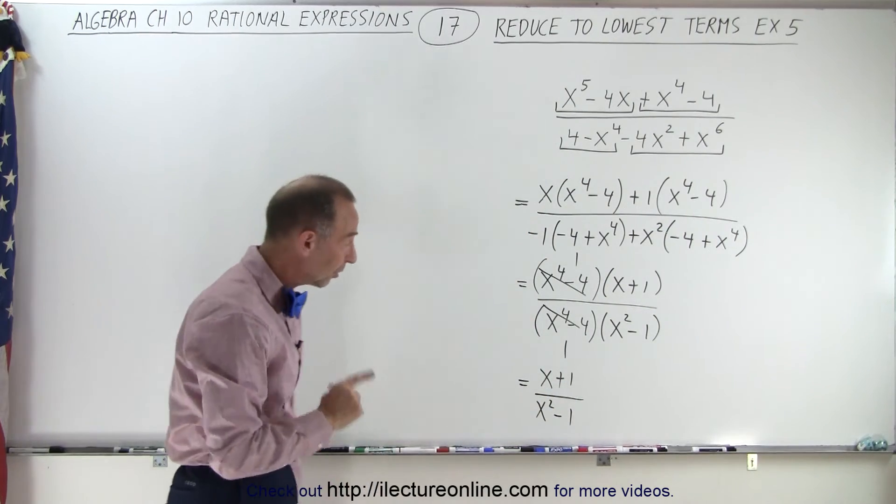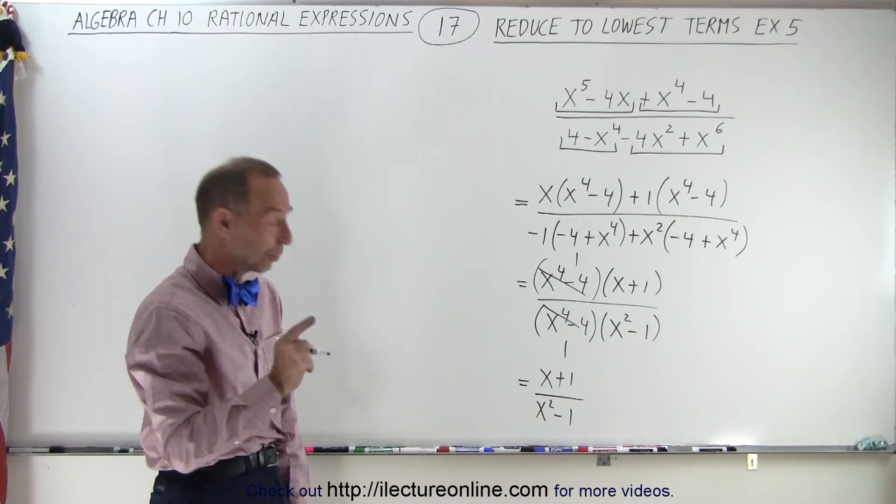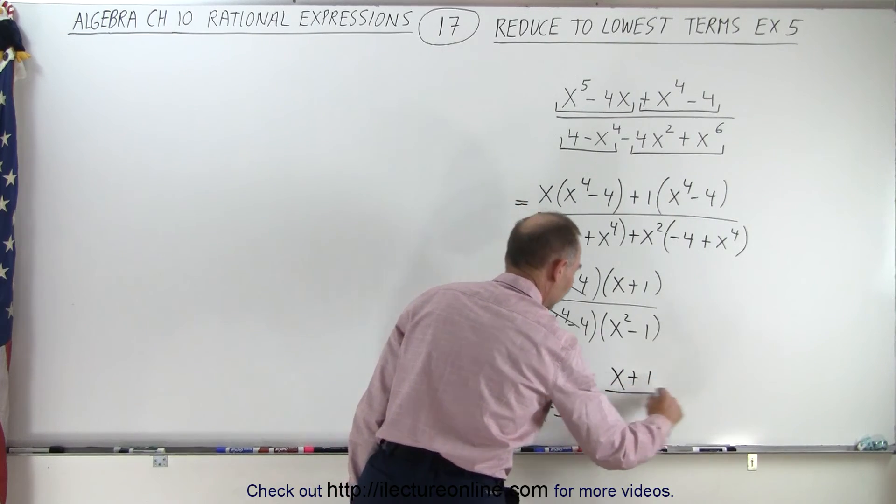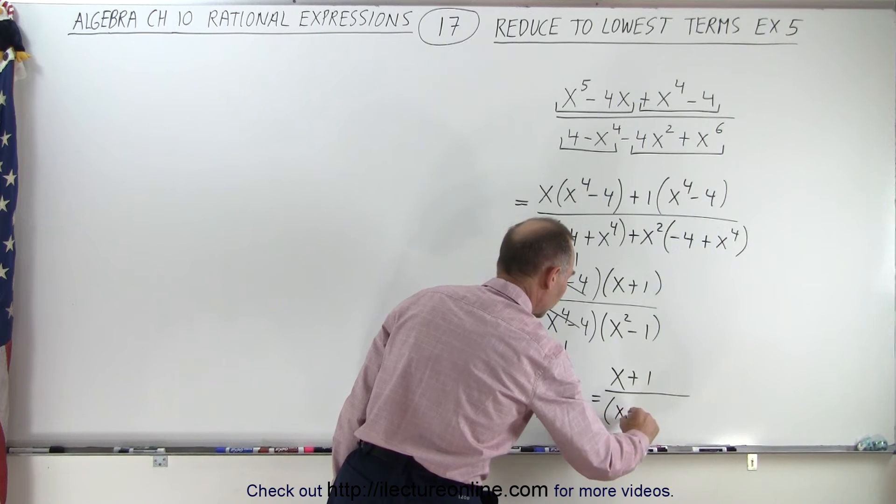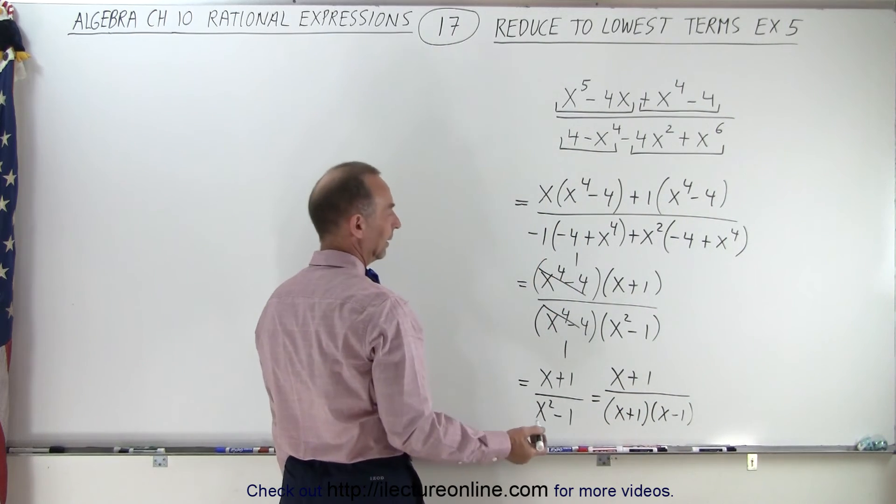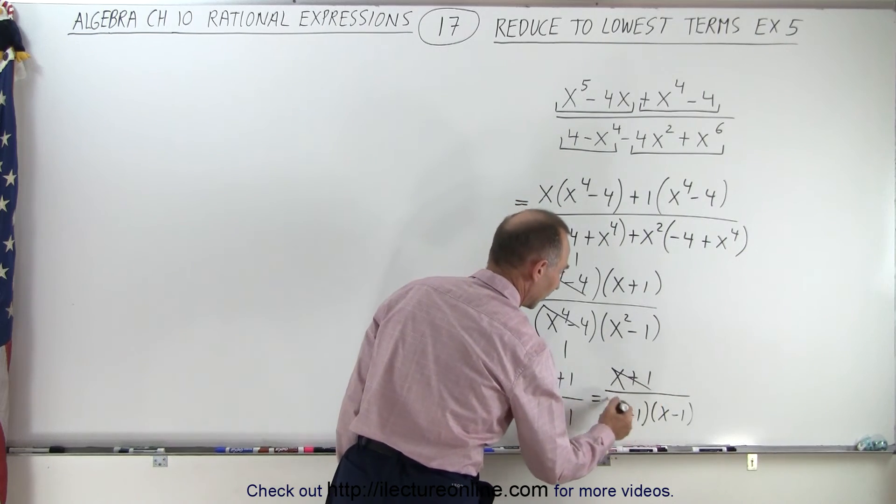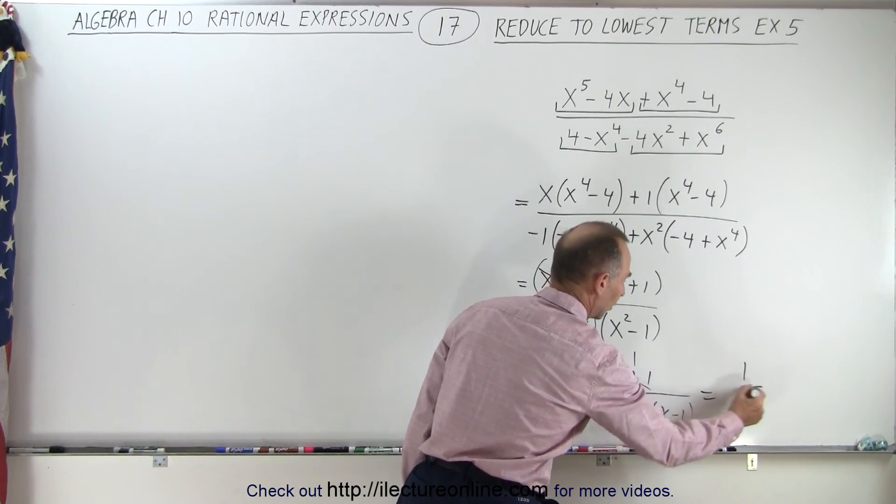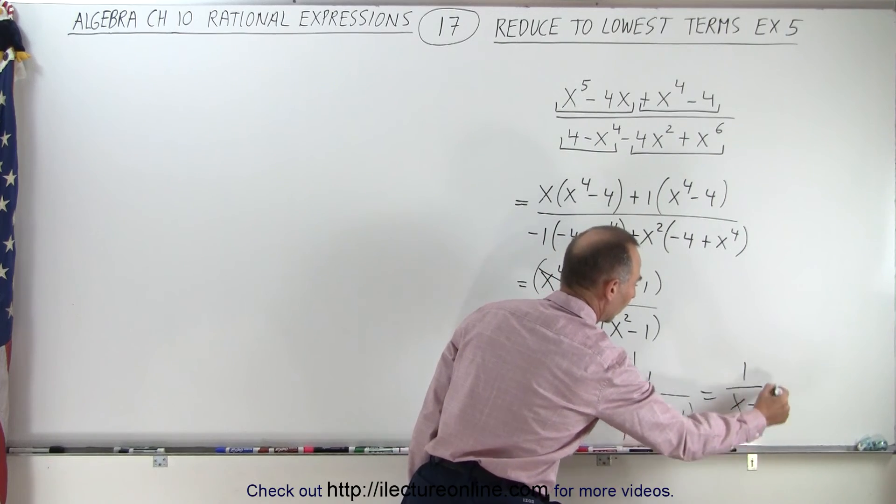But then we should realize that the denominator is the difference of squares, which means we can factor that as x plus one times x minus one. And then I realize I can reduce these two, and I'm left with one over x minus one.